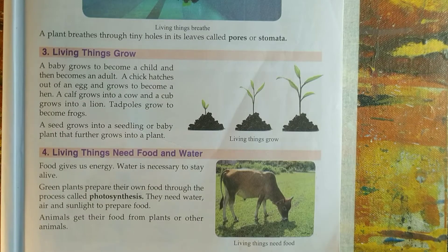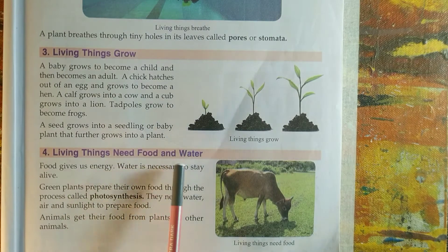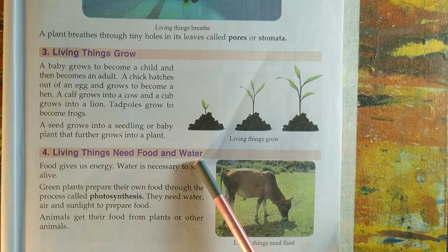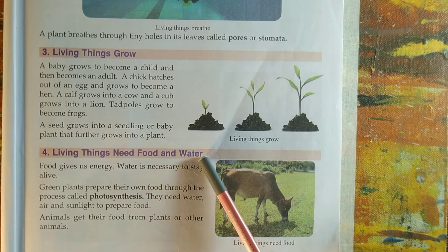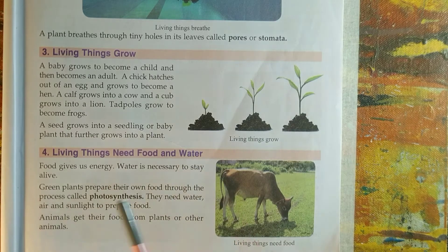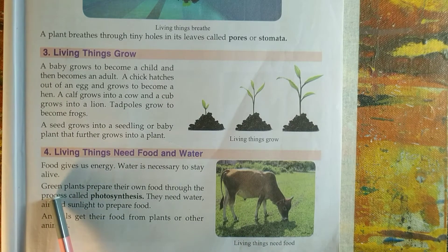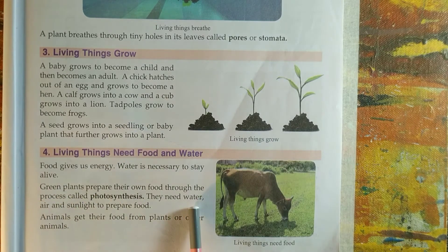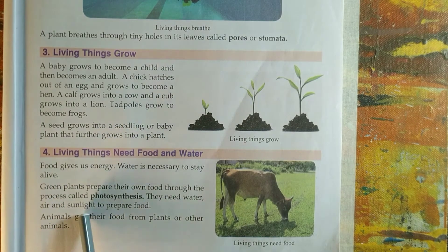Fourth feature: living things need food. All living things require energy for different kinds of activities, and that energy we get from our food. Water also plays an important role to keep us alive. Plants can prepare their own food by using water, air and sunlight, and the process is known as photosynthesis.